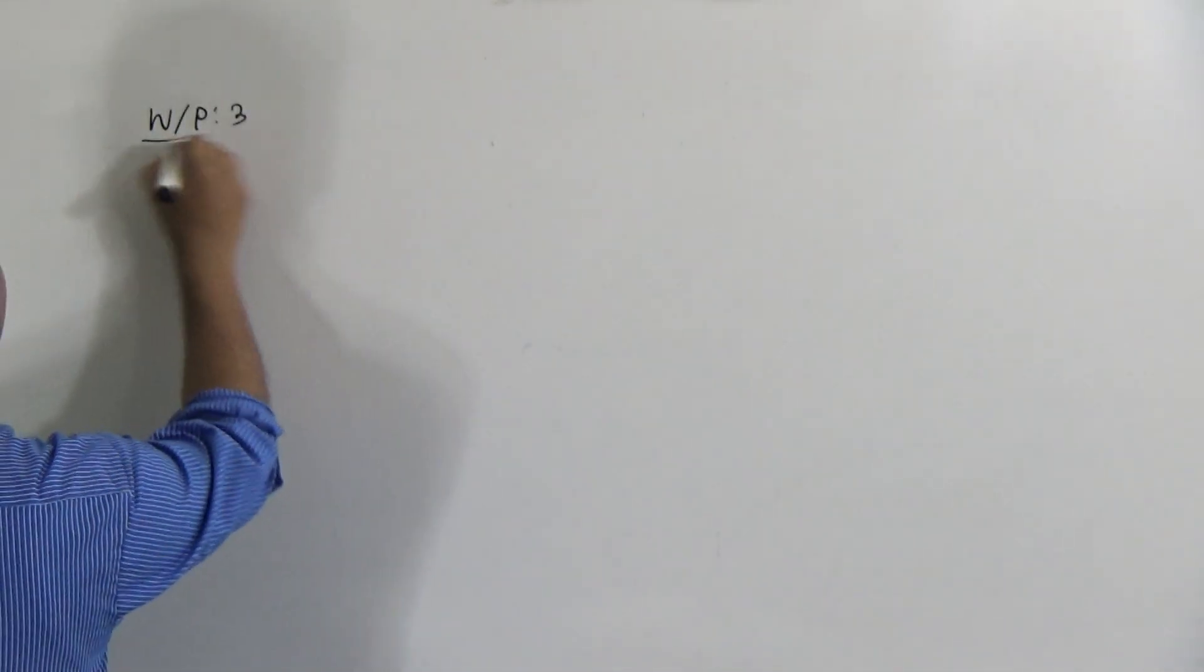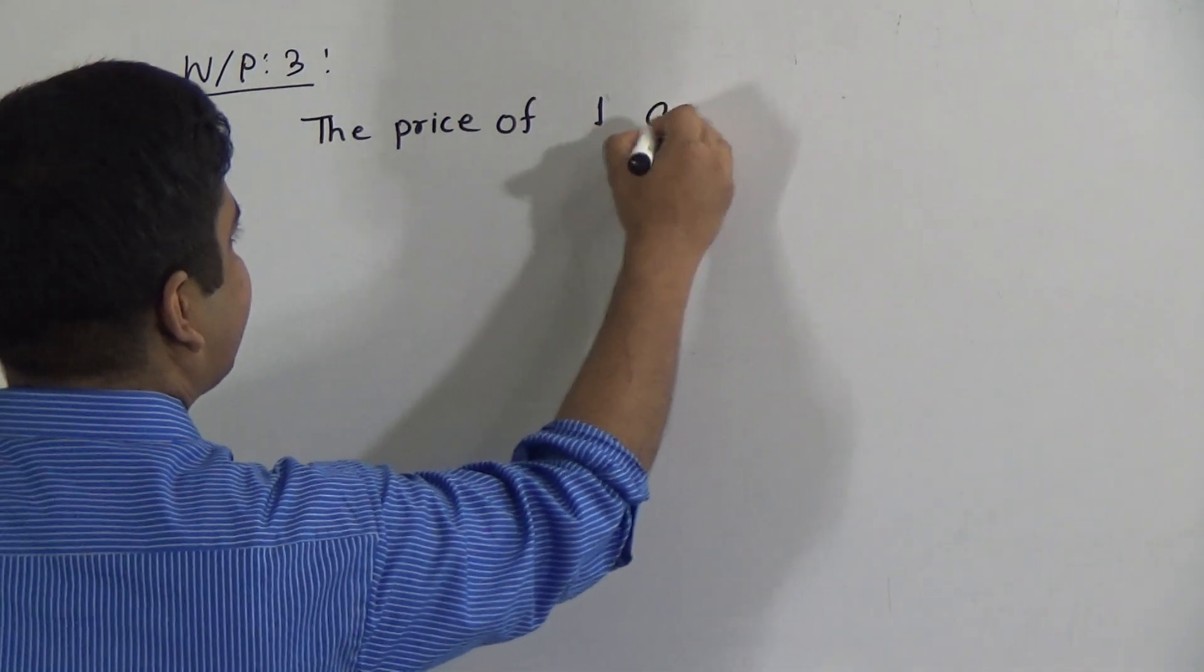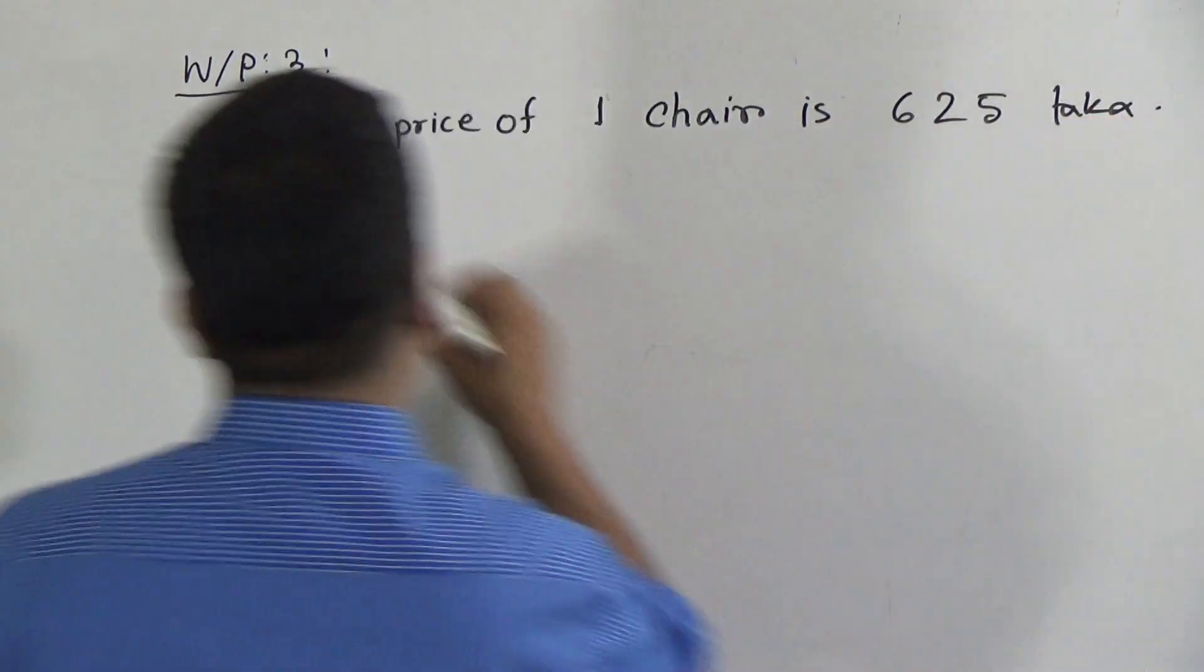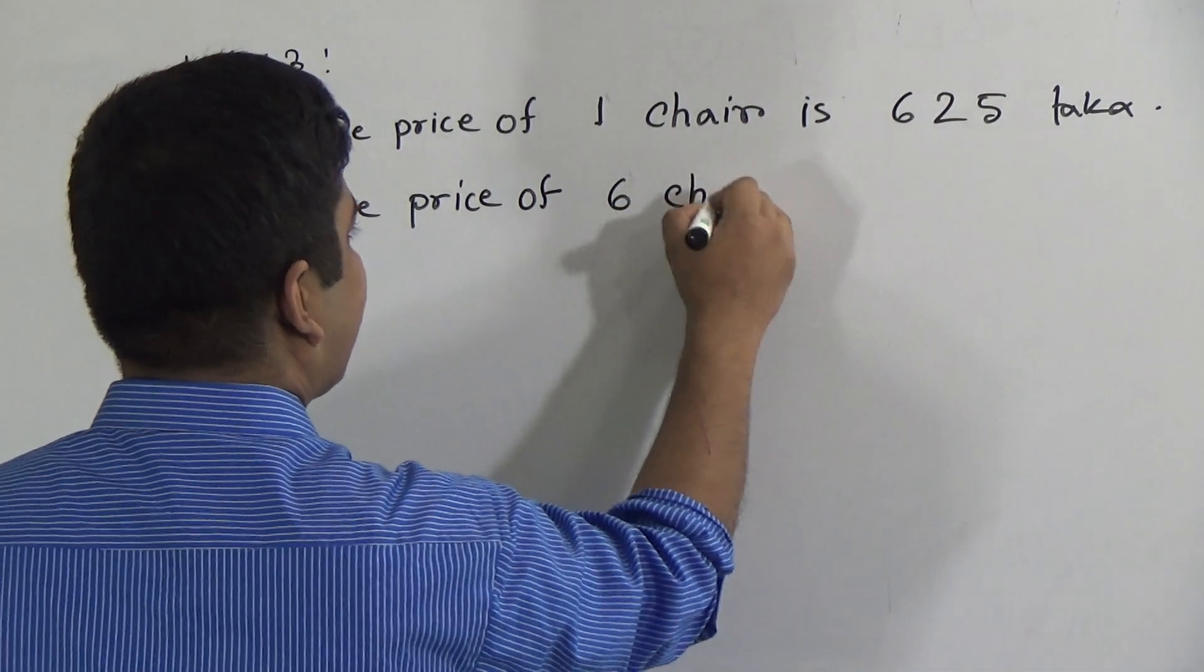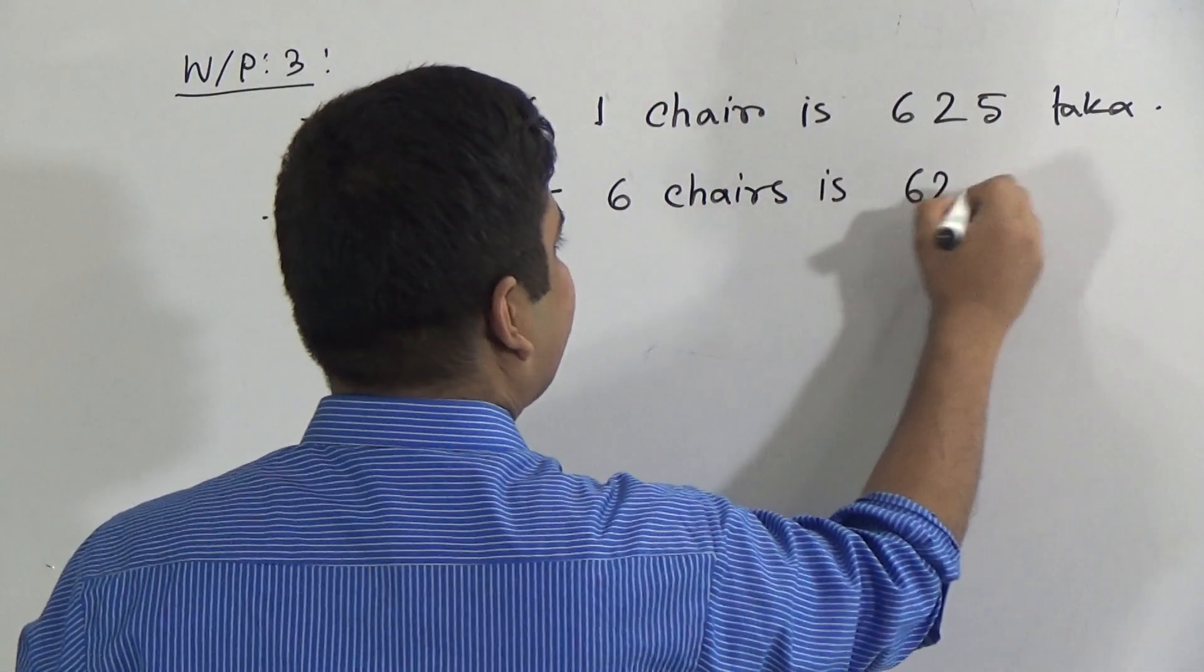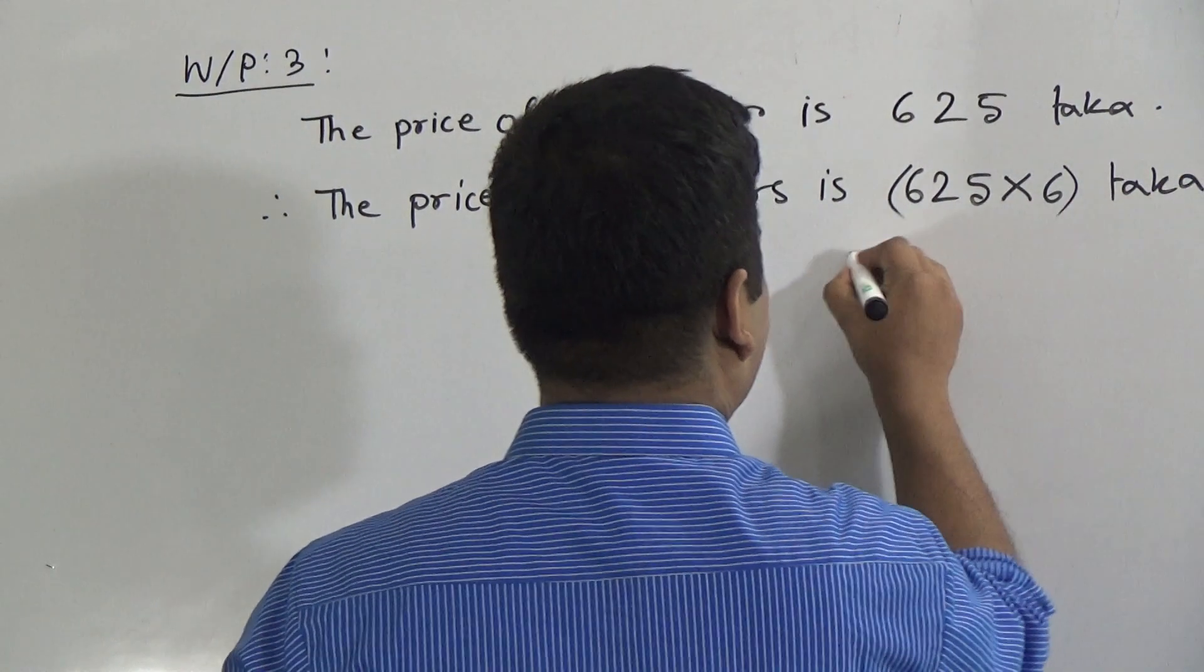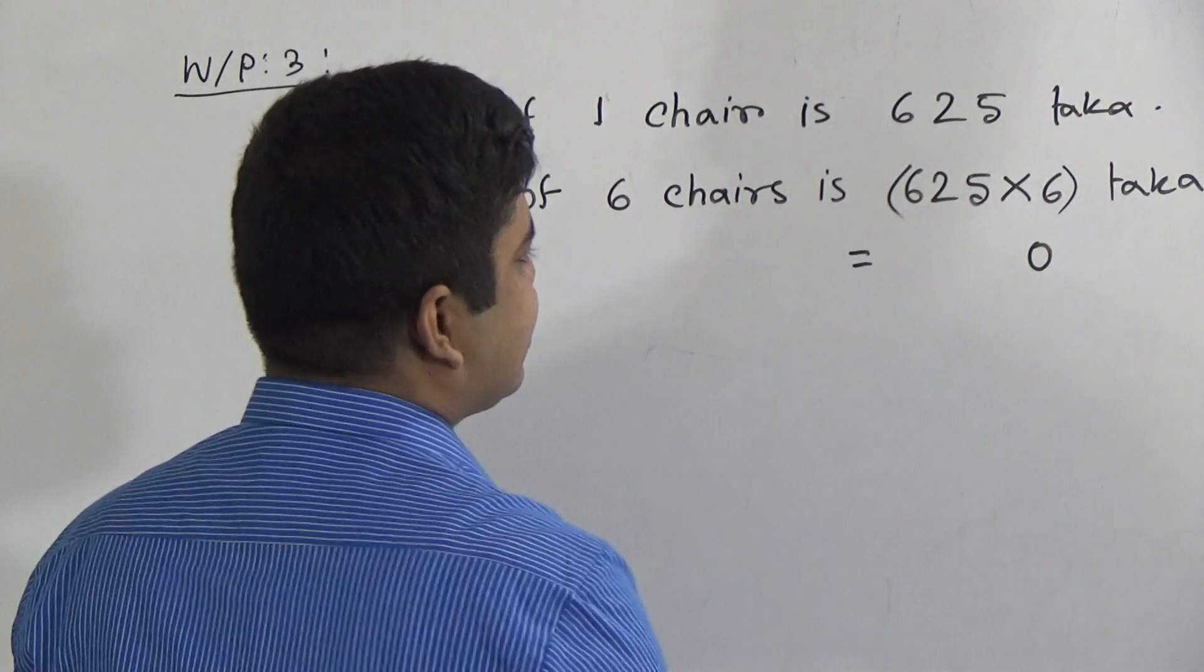So first of all, word problem number 3, which is on page number 13. Here, given the price of one chair is 625 taka. Therefore, the price of 6 chairs is 625 multiplied with 6 taka. Now we do multiplication here. 6 times 5 is 30, carrying 3. 6 times 2 is 12 plus 3, 15. From 15, I write here 5, carrying 1. 6 times 6 is 36, 36 plus 1, 37 taka.